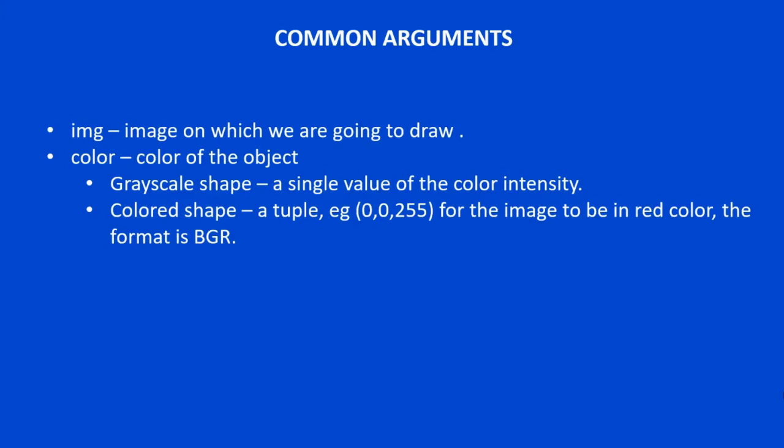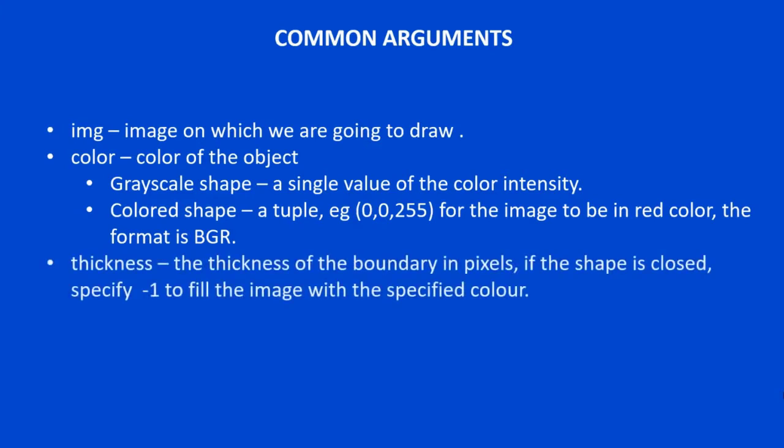For example, if you want to draw a red colored line or rectangle on the image, you pass in (0, 0, 255). The next common parameter is thickness, which you specify in pixels to define how thick your line should be. For closed shapes like rectangles or circles, you can specify the thickness of the border, or pass in -1 to fill the shape with the specified color.